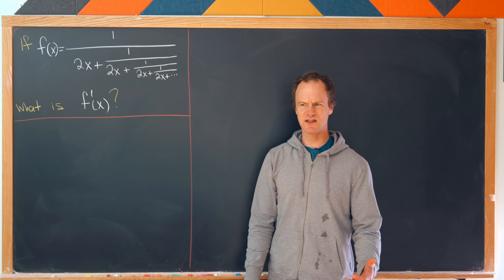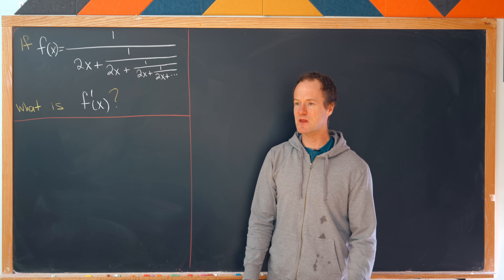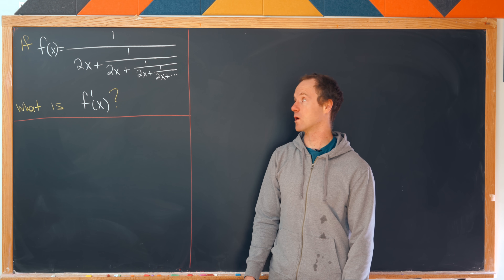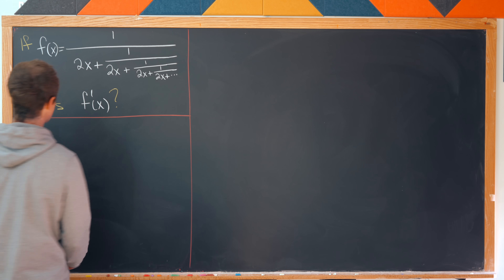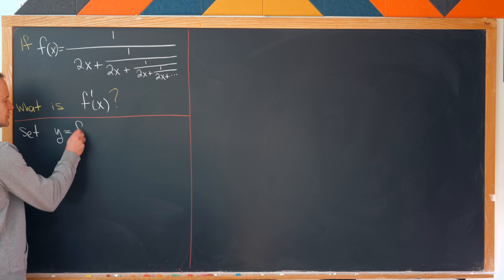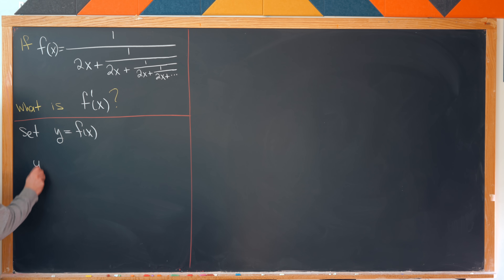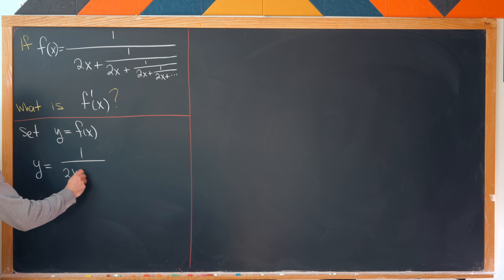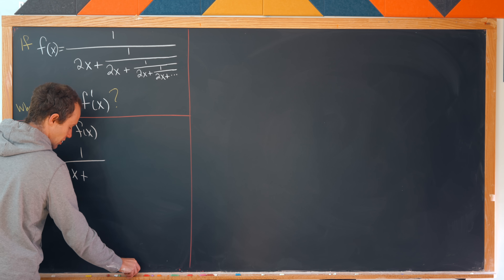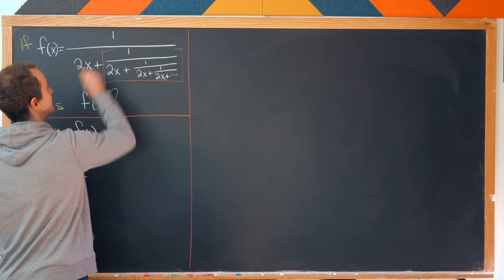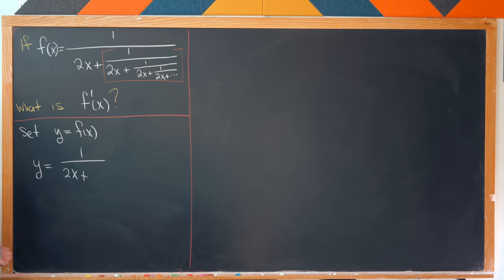Let's see how we might approach this. Maybe the best way is to find something like a closed form for f(x). Let's introduce a little notation — set y equal to f(x). Now notice we have y equals 1 over 2x plus... but that big chunk in the denominator is exactly our original function. So we've got y equals 1 over 2x plus y.